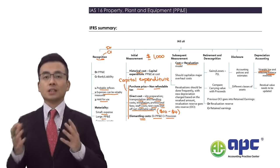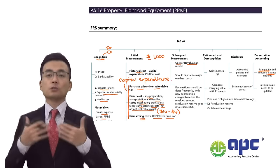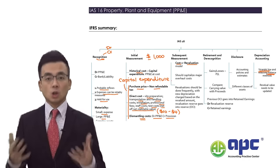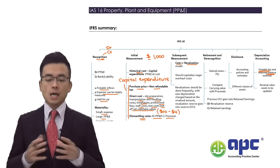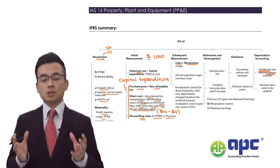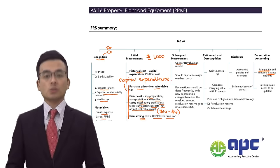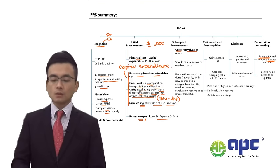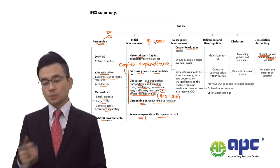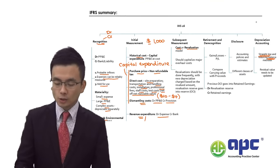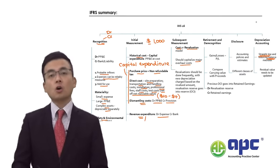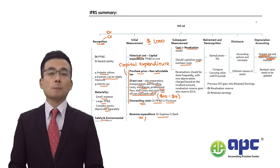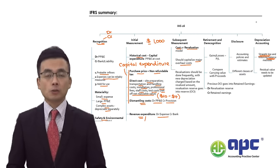For each category, you can use a different accounting policy — for example, the cost model for equipment and the revaluation model for property. For subsequent measurement, major overhaul costs — meaning major inspection costs — can also be relevant. In certain industries such as airlines, aircraft need inspection every few years and those costs can be significant.